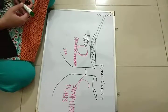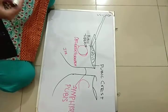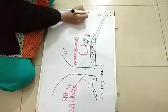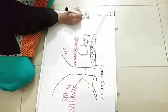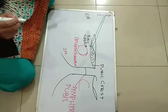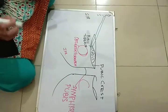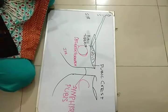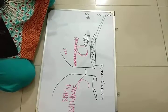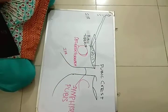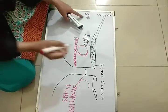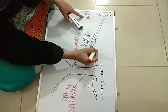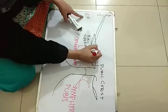First, we will discuss about the superficial inguinal ring. The superficial inguinal ring lies above the pubis, superiorly to the pubic tubercle. This is the pubic tubercle. So the superficial inguinal ring will be present superiorly to the pubic tubercle.